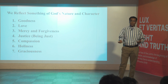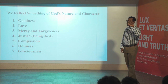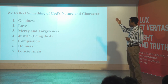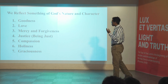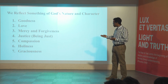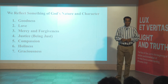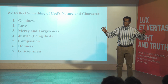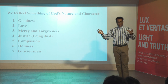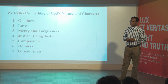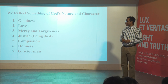At least I have seven things that can be represented as the image of God in us. Number one: goodness. Two: love. Three: mercy and forgiveness. Four: justice — being just. Five: compassion. Six: holiness. And seven: graciousness. No other creature can have these as human beings have. That's why we say we are created in the image of God, in his own image and likeness.